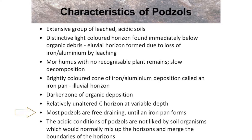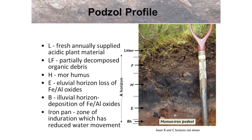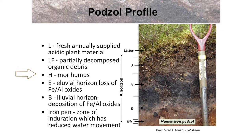Most Podzols are free draining until the iron pan forms. This picture shows the upper part of a Podzol profile — the A horizon. The A horizon has four distinct layers. At the top is the litter: fresh, annually supplied acidic plant material which decomposes only slowly. The LF layer is partially decomposed organic debris. The H layer, or mor humus, is well broken down organic material. Finally, within the A horizon, there is an E or eluvial horizon, bleached due to the washing out of the iron and/or aluminium oxides.